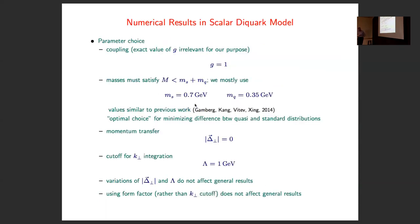Let me spend a moment on the parameters. We have the nucleon-quark-diquark coupling, which we choose to be 1 — the actual value doesn't matter since we just want to compare the quasi to the standard distribution. The masses must satisfy the condition that the nucleon mass is smaller than the sum of spectator and quark masses. In most results we use 700 MeV for the spectator and a constituent-type quark mass. This choice turns out to be almost optimal when minimizing the discrepancy between quasi and standard distributions.